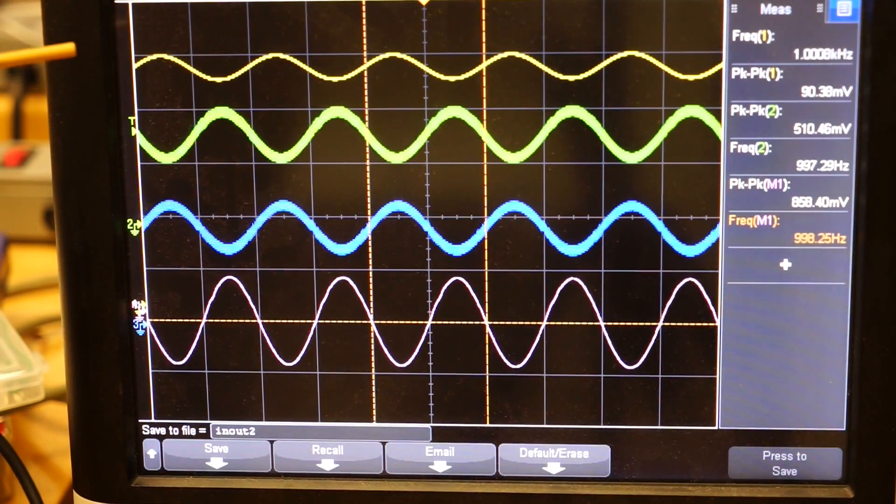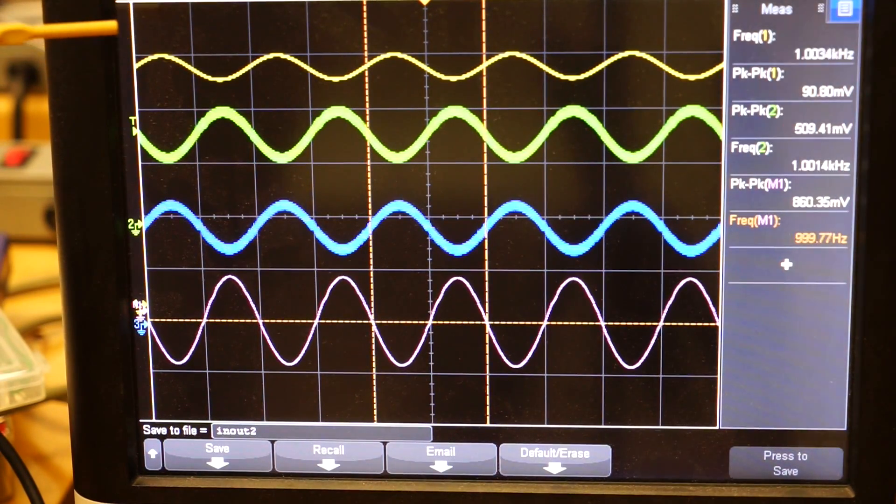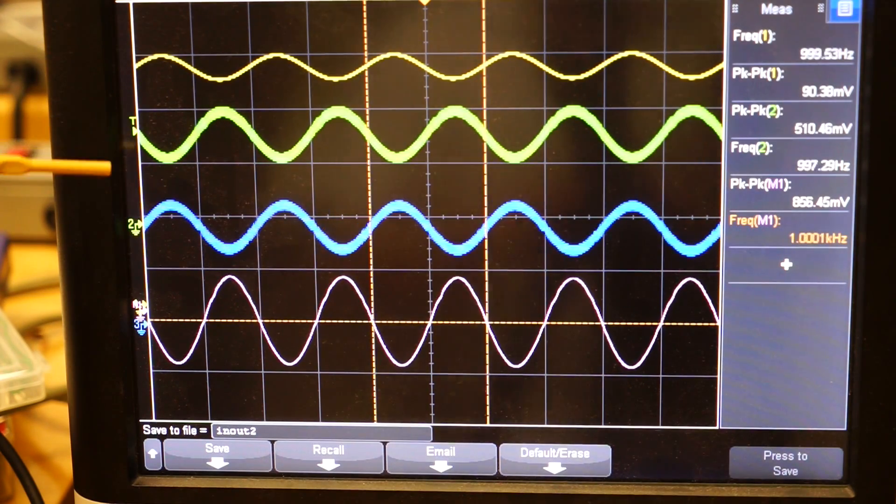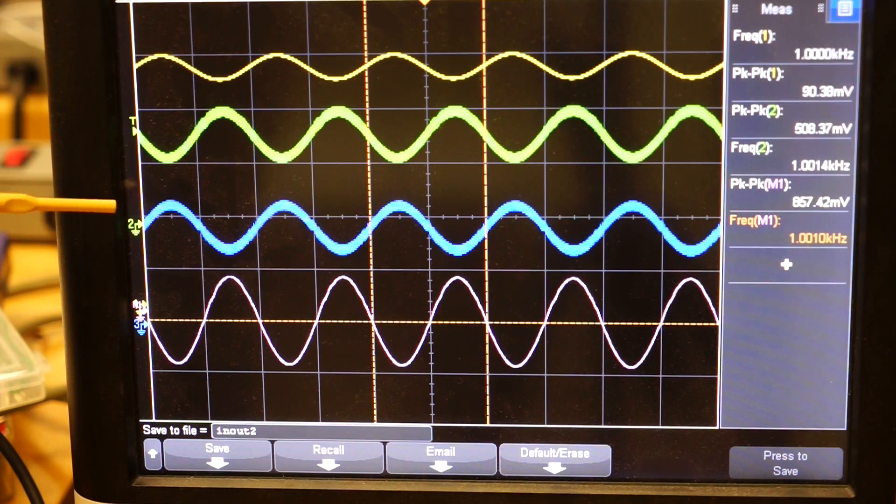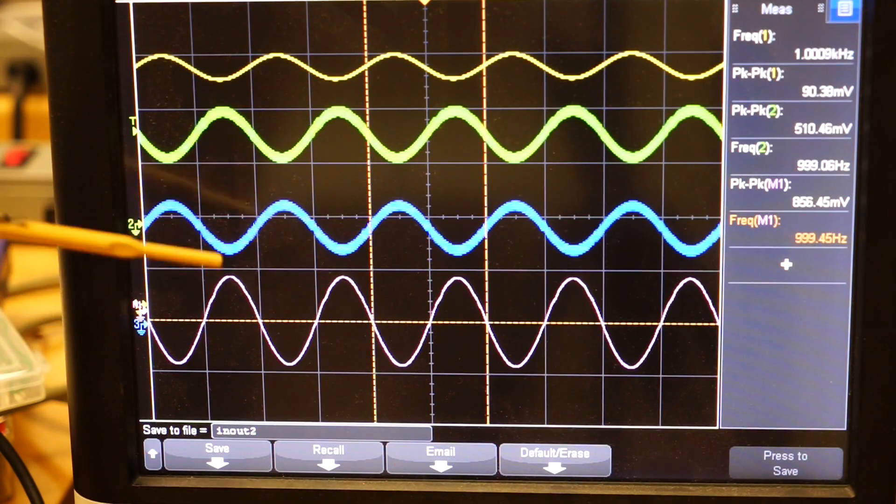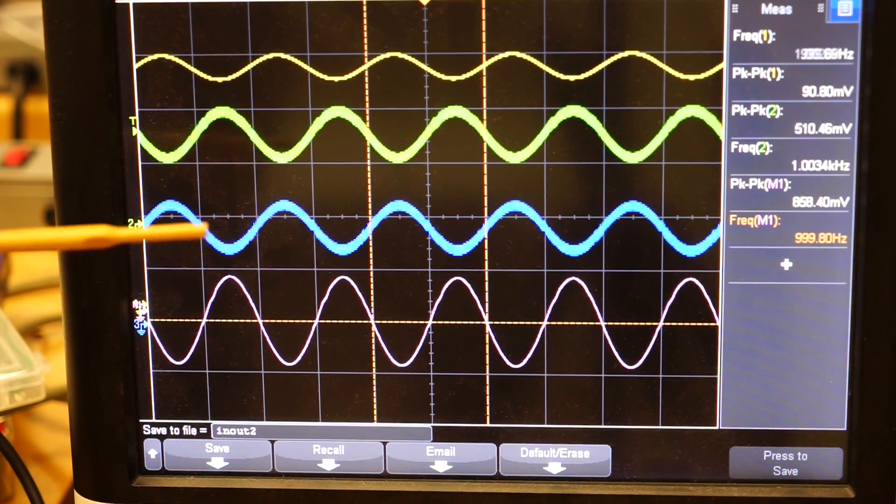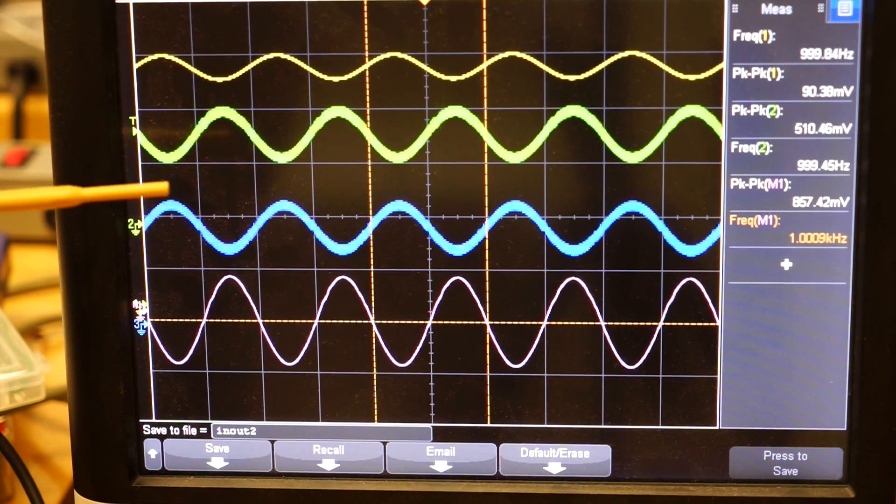As you can see from the screen, this is our 1kHz input signal and this is the negative channel output and this is the positive channel output. And by subtracting the two channels, we have the differential output signal here. As you can see from the screen, we have a gain about 5.